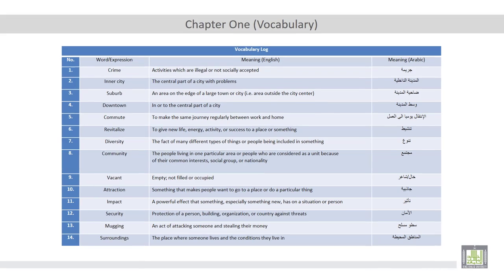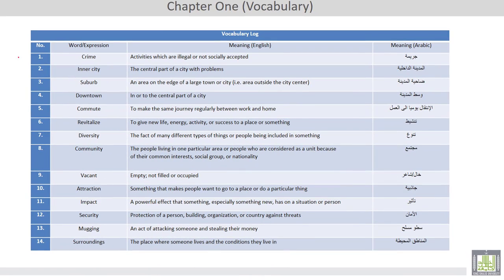The vocabulary log of this chapter includes words like crime, inner city, suburb, downtown, commute, revitalize, diversity, community, vacant, attraction, impact, security, mugging, and surroundings.